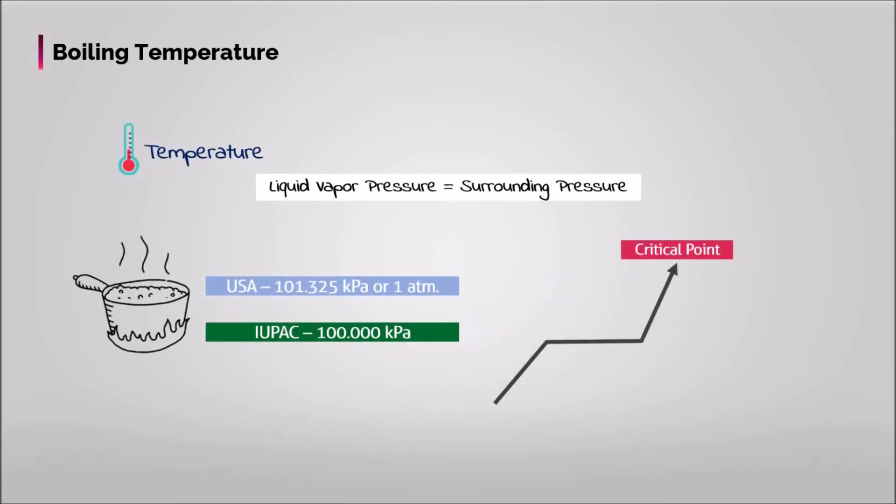The boiling point increases with increased pressure up to the critical point. At this point, the gas and liquid properties are identical. The boiling point cannot be increased beyond the critical point.